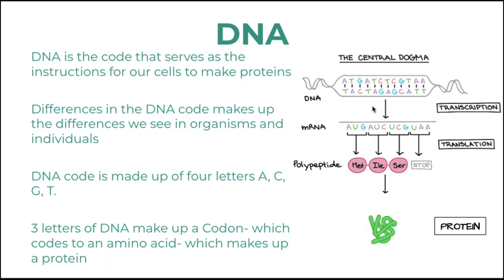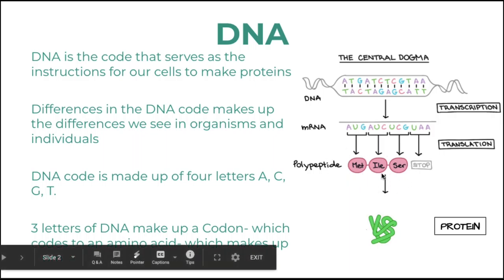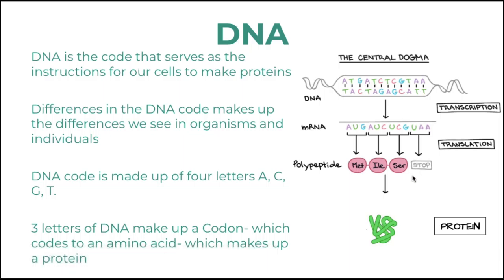Thymine changes to uracil when the DNA is transcribed into an mRNA, which stands for messenger RNA. It's made by reading a segment of the DNA called a gene. The gene has the code — every three nucleotides is called a codon — and it codes for the ribosome to read the message and build the protein with amino acids.